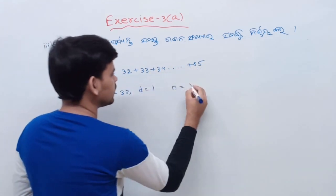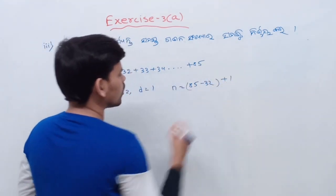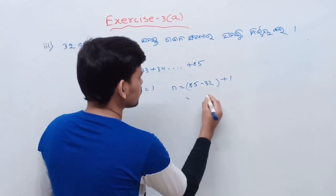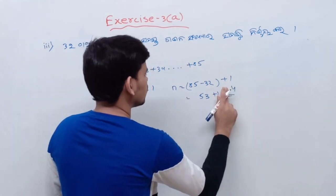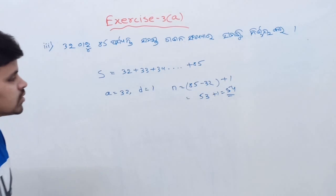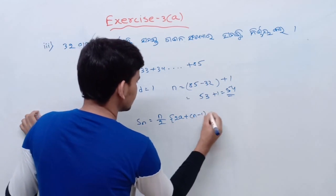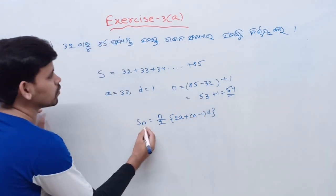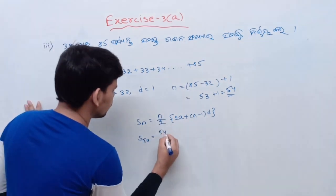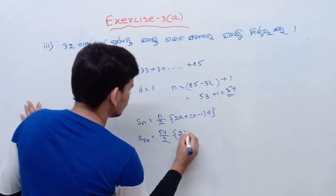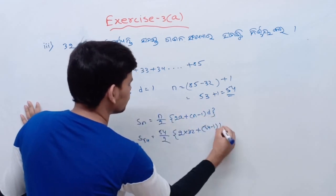53 plus 1 equals 54, meaning N is equal to 54. So N is equal to 54, N by 2, 2A plus N minus 1 into D. So S is equal to 54 by 2 into 2 into A, 32 plus N is equal to 54 minus 1. So D is equal to 1.